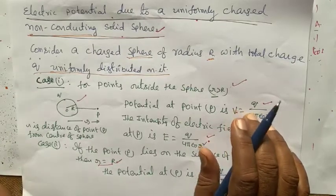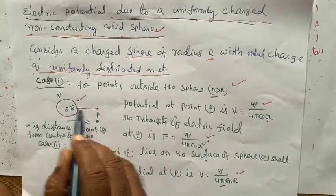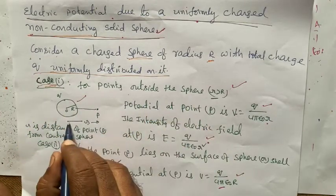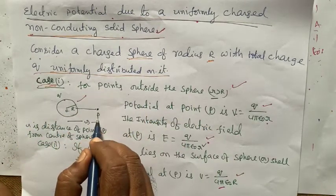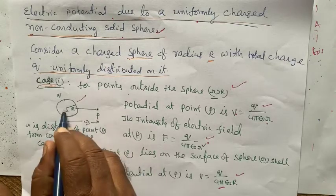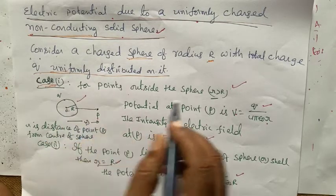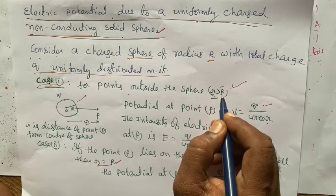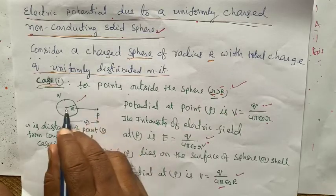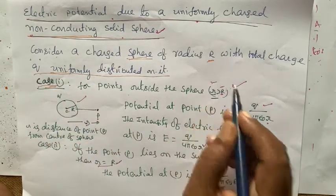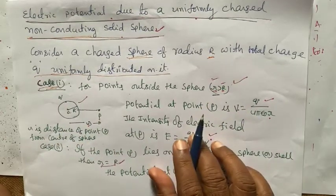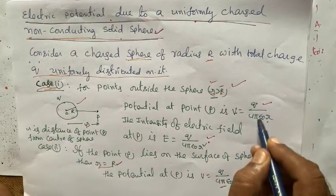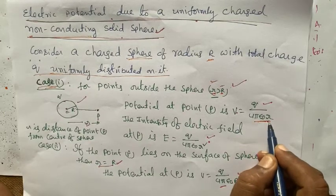Case 1: Reference point outside the sphere. For points outside the sphere, the distance of reference point P from the center of the non-conducting sphere, small r, is greater than capital R. The radius of the sphere is less than the distance of the reference point from the center.